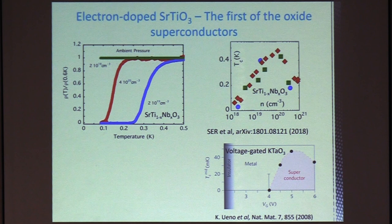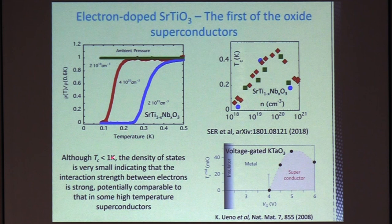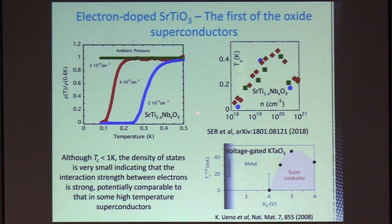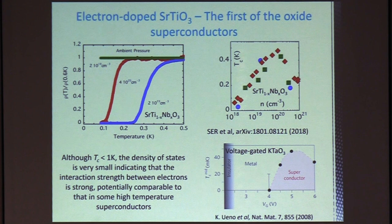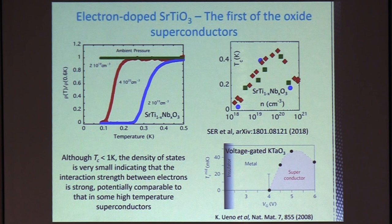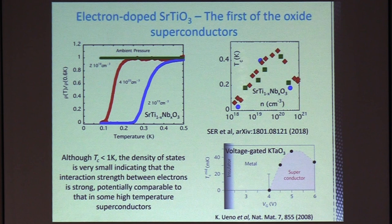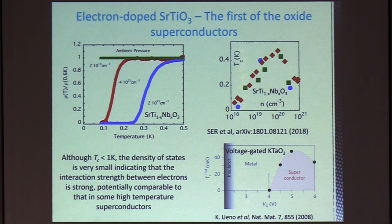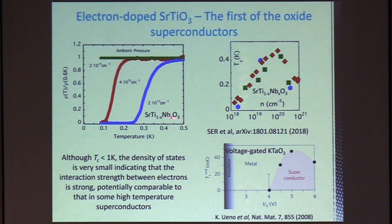So although TC is less than one Kelvin, the density of states in these materials is very small. They're in this range. It's been observed, I think, down to around 10 to the 17, 10 to the 18 carriers per cc. So that indicates that the density of states is very low, and the interaction strength between the electrons must be incredibly strong. So the glue pairing the electrons is one of the strongest that we know about. If you could scale this density of states up to usual metallic densities, you would have much higher than a room-temperature superconductor.